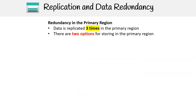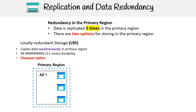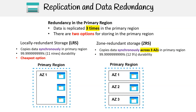For redundancy in the primary region, data is replicated three times in the primary region. There are two options. Locally redundant storage copies data synchronously in the primary region with 99.999999999% — that's 11 nines — durability, and is the cheapest option. Zone redundant storage copies data synchronously across three availability zones in the primary region with 99.9999999999% — 12 nines — durability.